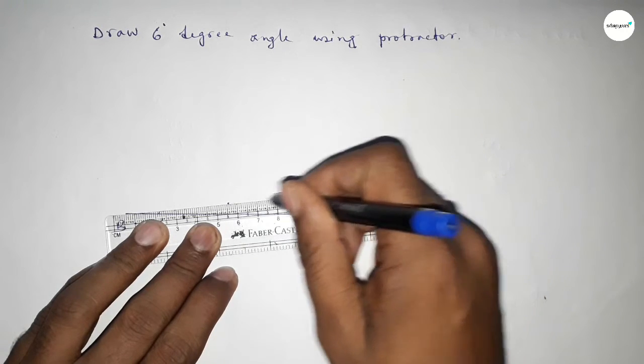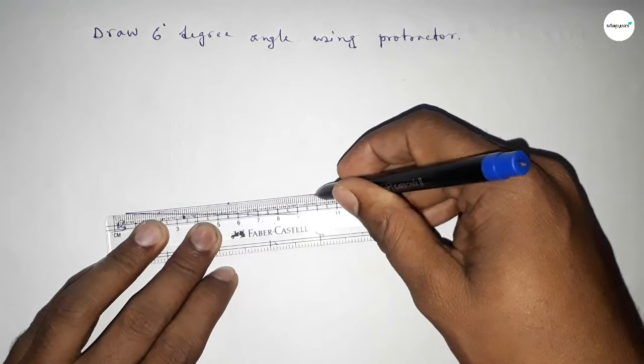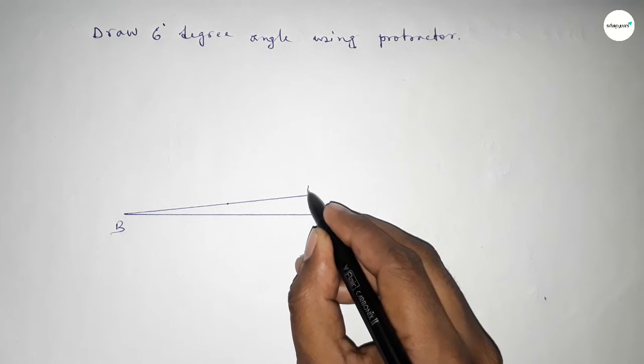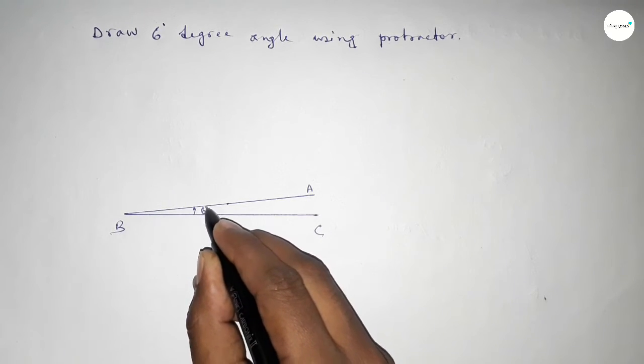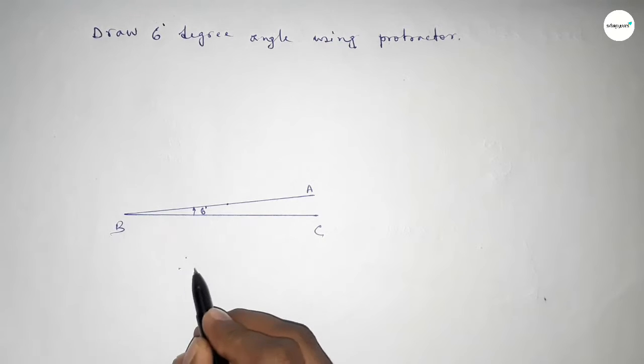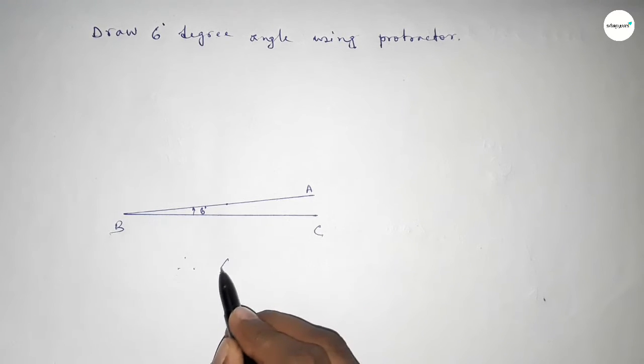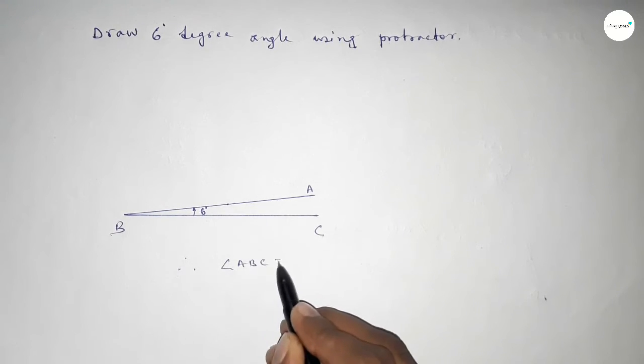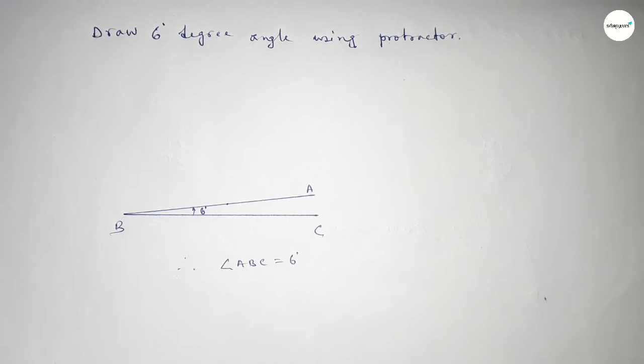Take here a point A, so angle ABC is six degrees. Therefore, angle ABC equals six degree angle. That's all, thanks for watching. If this video is helpful to you then please share it with your friends.